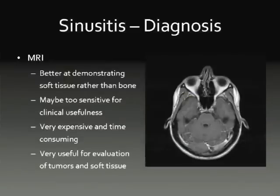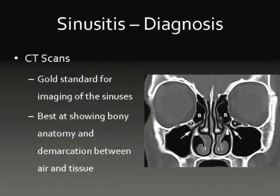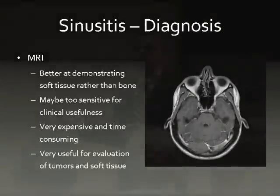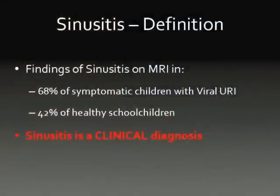MRI is much better at soft tissue but not good at distinguishing bone from air, which is mainly what sinuses are. MRI does show inflamed tissues very brightly because of their fluid content. But 42% of kids without a cold show signs of sinusitis on MRI - making it too sensitive. If you treated everyone with MRI sinusitis findings, half of normal healthy kids would be getting treatment. Sinusitis remains primarily a clinical diagnosis based on that major and minor symptoms scale.